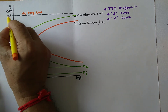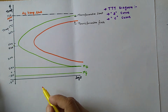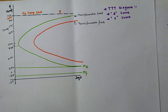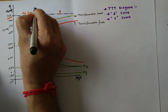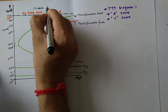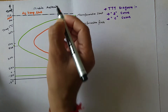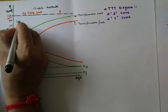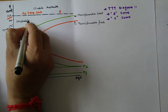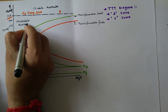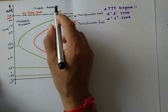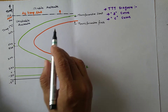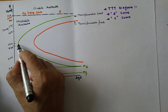The A1 temperature is at 723 degrees centigrade. So above this line, your austenite is stable — stable austenite is there. And below the A1 line, there is unstable austenite, meaning it will transform into some structure depending on the cooling rate.